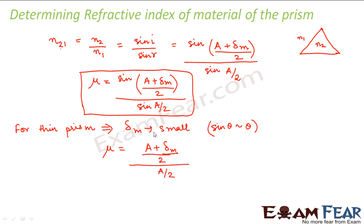If we assume that both a, that is angle of the prism, and delta m is very small, because if the prism is very thin, this angle will also be very small. Let us suppose if it is a thin prism, so this angle will also be very small.